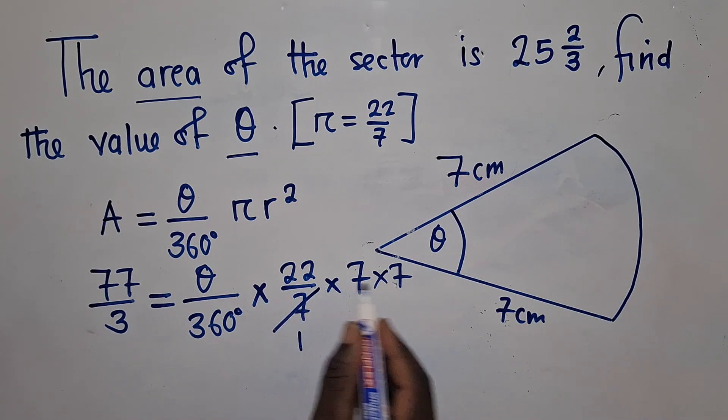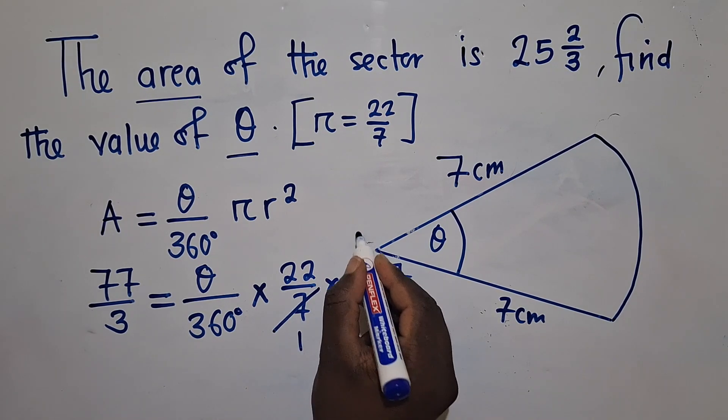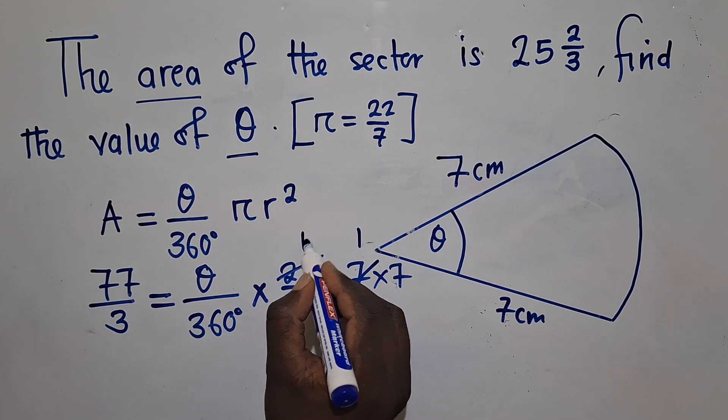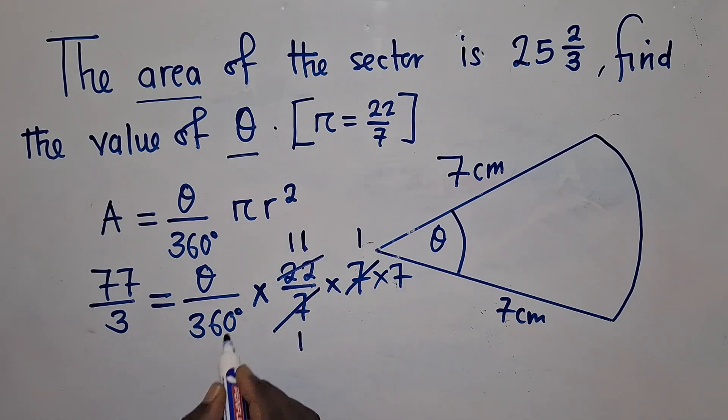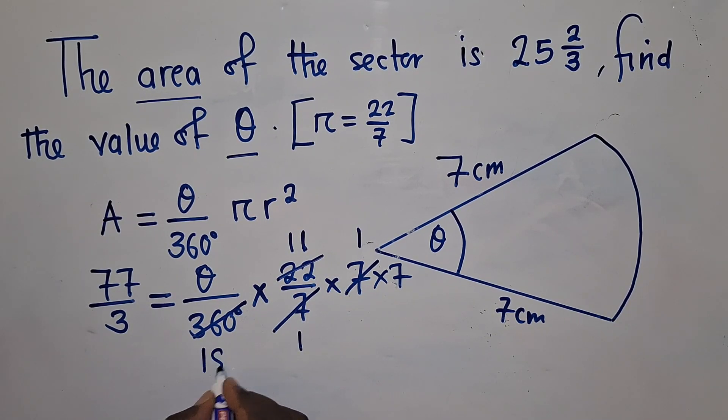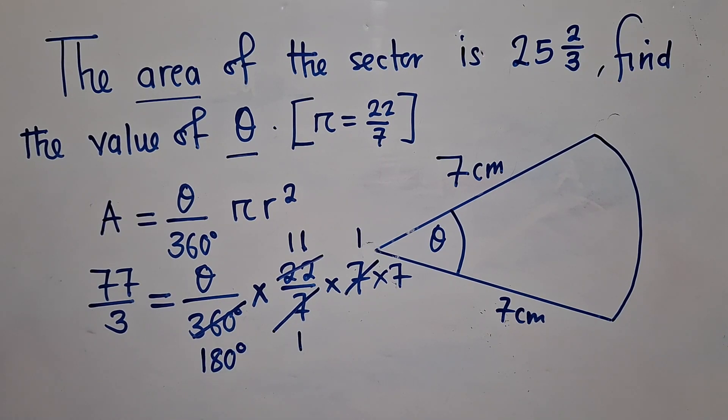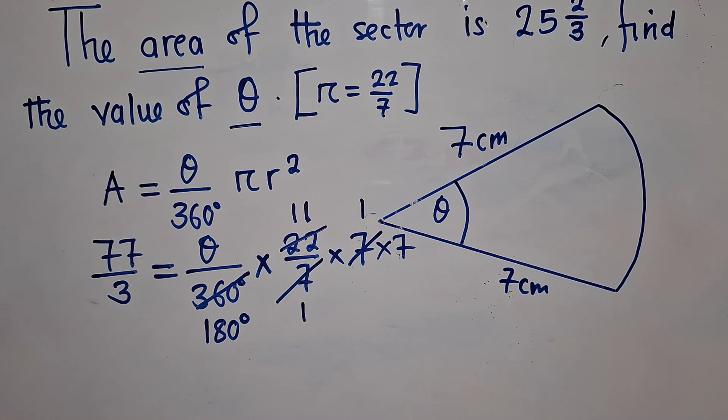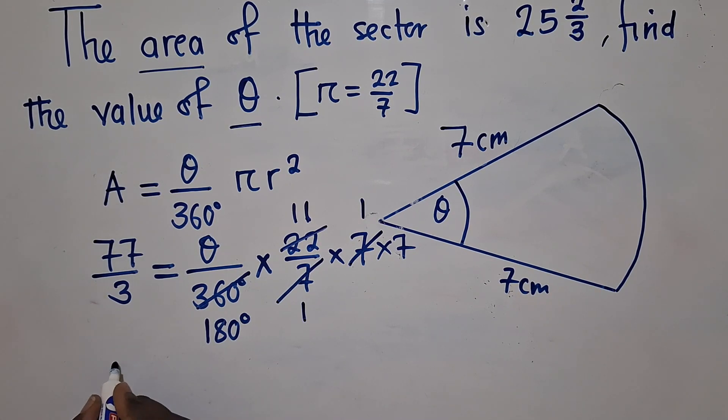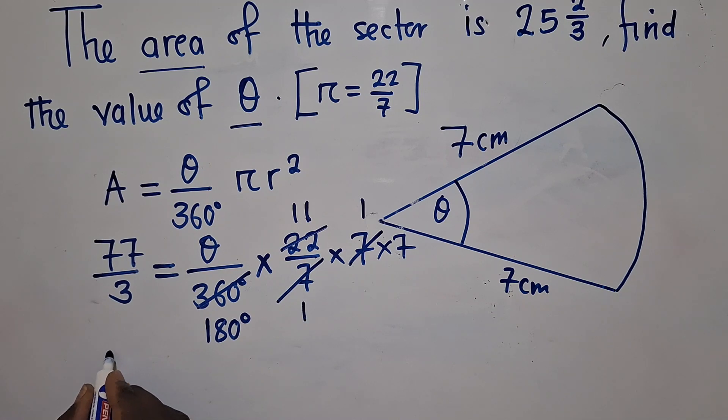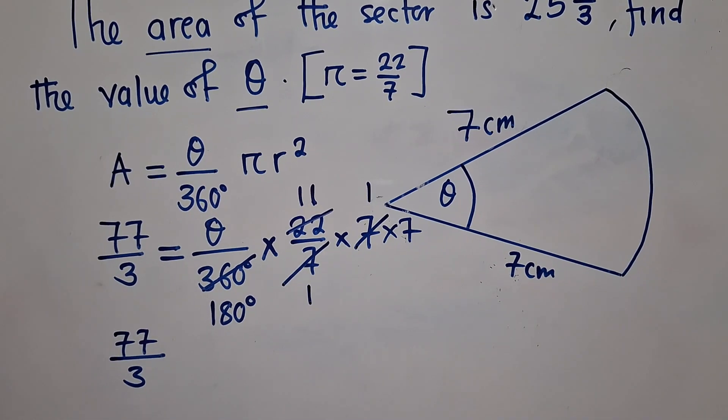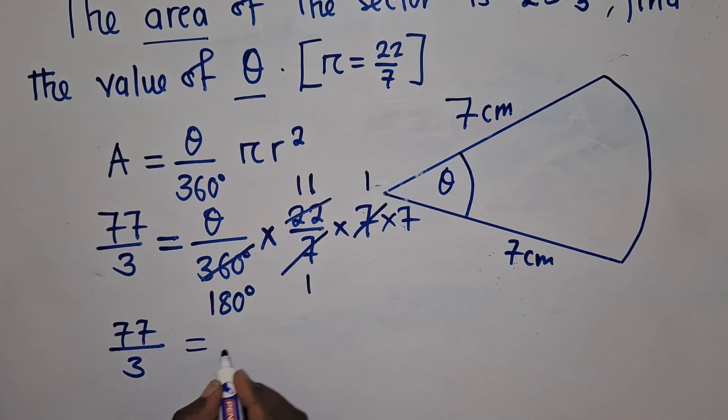Look at this. I'm going to say 7 into 7, it's 1, since it's multiplication. 7 into 7 is 1. You see, 2 into 22 will give me 11, and then 2 into 360 will definitely give me 180.